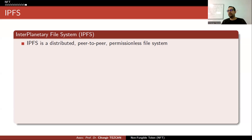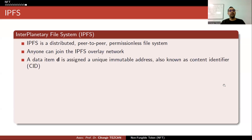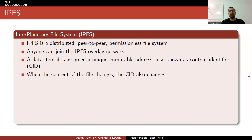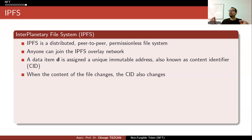People prefer IPFS — the InterPlanetary File System — a distributed peer-to-peer permissionless file system where anyone can join the network. Each data item is assigned a unique immutable address called a content identifier, or CID. The image is divided into pieces, each piece is hashed, a Merkle tree is created from those hashes, and the Merkle root becomes the CID. If the content of the file changes, the CID also changes — even a single pixel change will change the hash value.